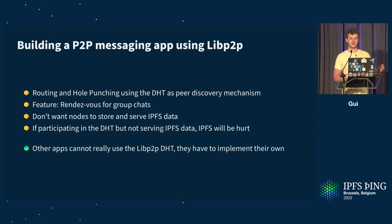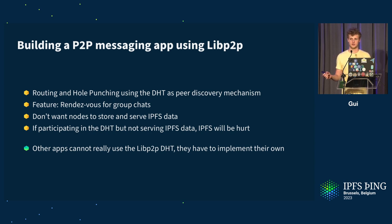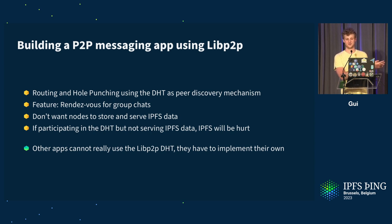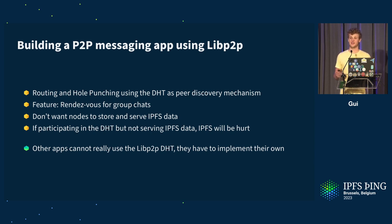I could take LibP2P's Kademlia implementation, but then I'd be storing IPFS data. Or I could fork it and remove all IPFS stuff, but then IPFS would get hurt — if many applications do this, maybe only 10% of LibP2P DHT nodes are IPFS nodes, so when storing IPFS content I'd find that most of the 20 closest nodes don't run the IPFS protocol. Applications building on LibP2P would have to build their own DHT and have their own bootstrapper peers, which isn't ideal.